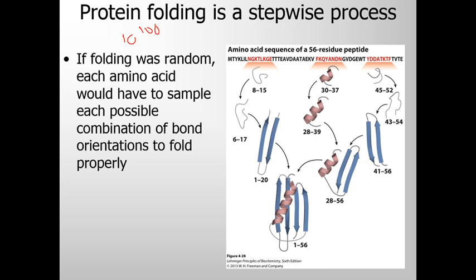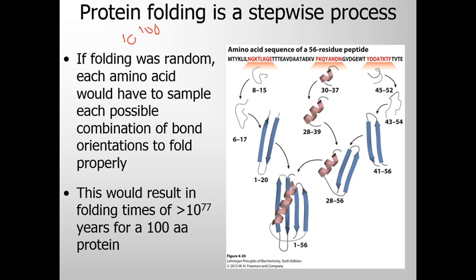This is the number of different conformations that a polypeptide could adopt if each amino acid in a 100 amino acid chain could take up 10 different conformations. Now let us also assume that the protein folds spontaneously by a random process in which it tries all possible conformations around every single bond in its backbone until it finds its native conformation. If this were to happen, this would result in folding times of greater than 10 to the power of 77 years for a 100 amino acid protein.